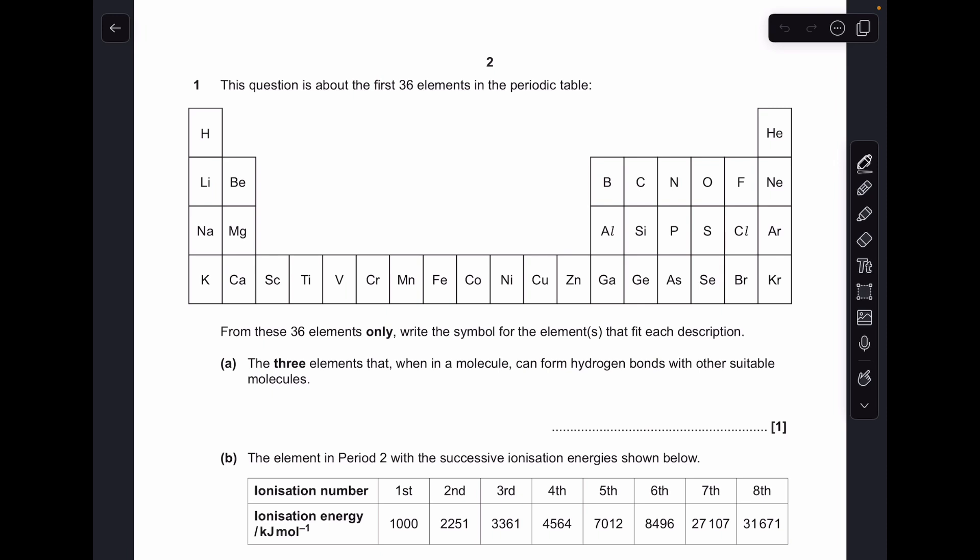So part A, three elements that, when in a molecule, can form hydrogen bonds with other suitable molecules. Well, the obvious one to go for is hydrogen itself, but the other three you could have: fluorine, oxygen, nitrogen. So any three from that list of four is fine.